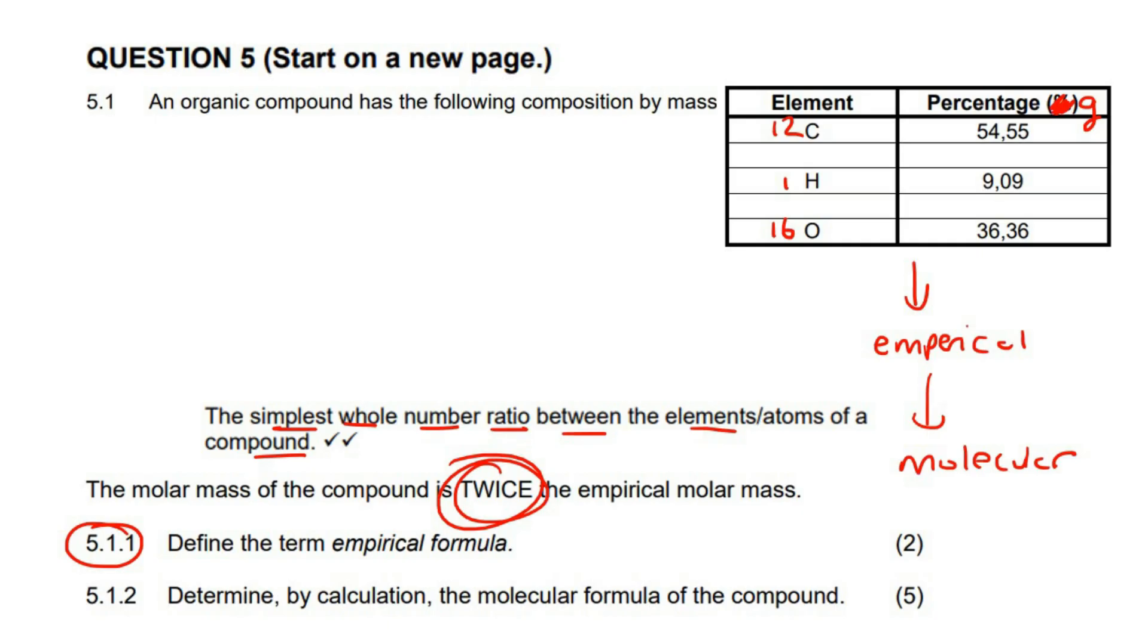So that means that we then have 54.55 grams of carbon. It then means we have 9.09 grams of hydrogen. And then for oxygen, that would be 36.36 grams.